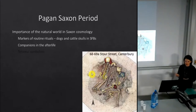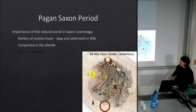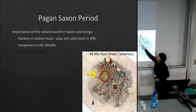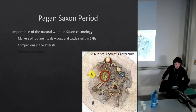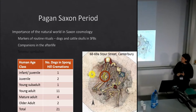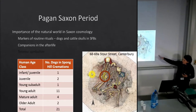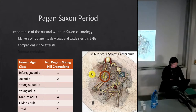We also have animals used as companions in the afterlife. This is an inhumation burial from Canterbury where a little dog is buried alongside a family group. We also see this in cremation burials — for example at Spong Hill, where dogs were cremated alongside people and placed into the cremation urns.